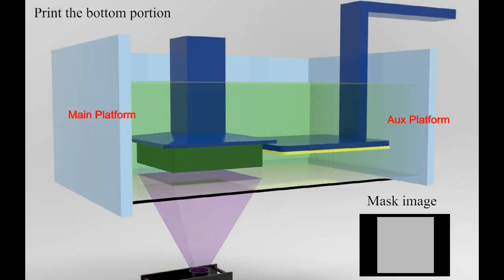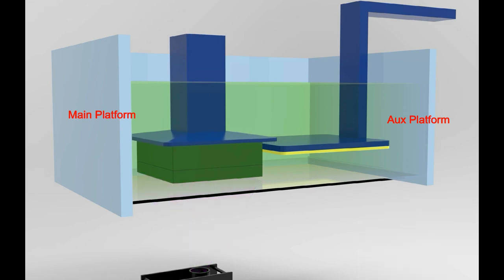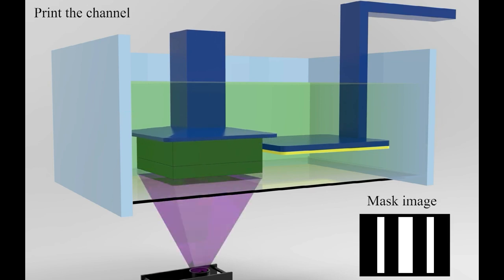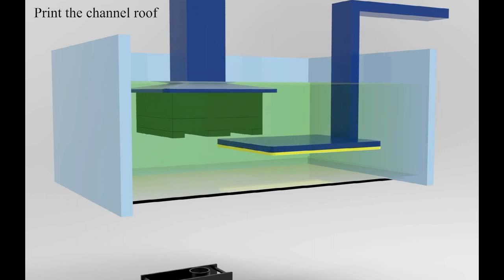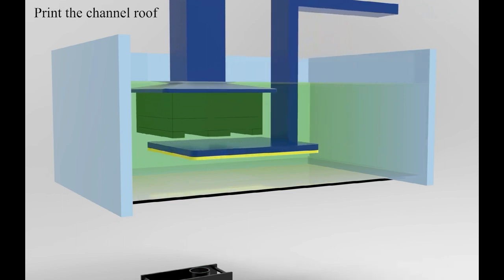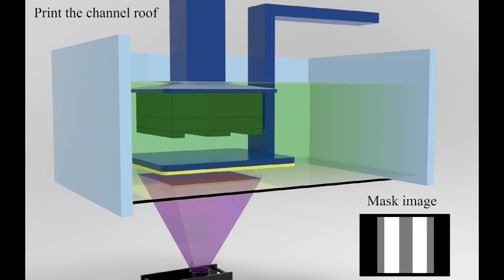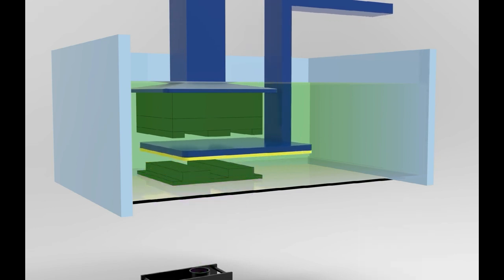First, the base and the channel portion of the part are mainly 3D printed using the normal VPP process. When printing the channel roof, the top portion enclosing the channel, the AUX platform is utilized as a constrained surface to prevent light penetration, so resins inside microchannels receive no light energy.